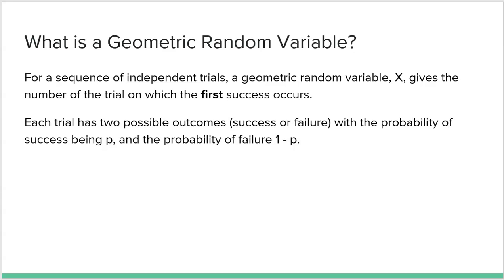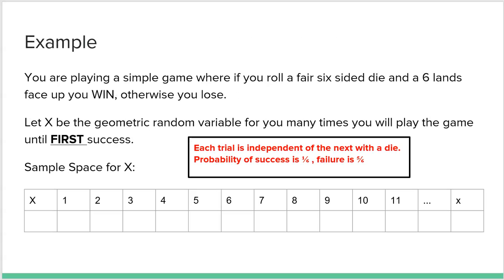These have to be independent trials, which was also true for the binomial random variable. What happens on each trial cannot affect the next. The geometric model is different from binomial because here the random variable is simply when we get our first success — what trial the first success occurs on. The binomial model depended on N, how many trials you had, and X was how many successes within those trials.